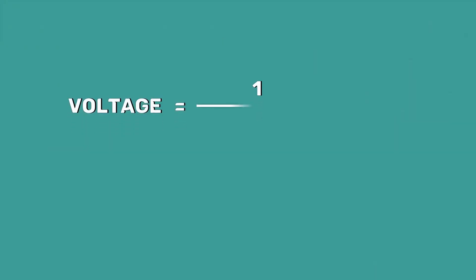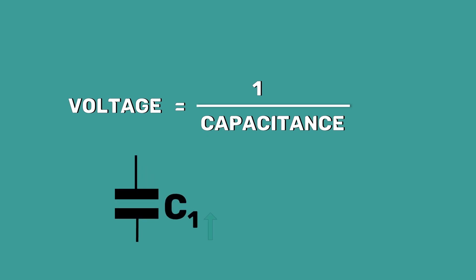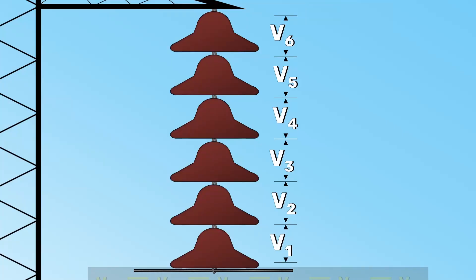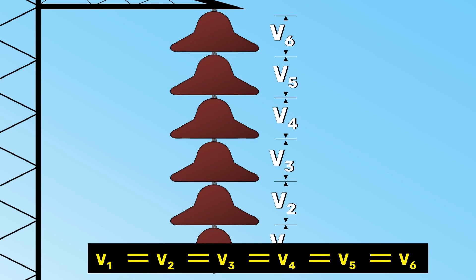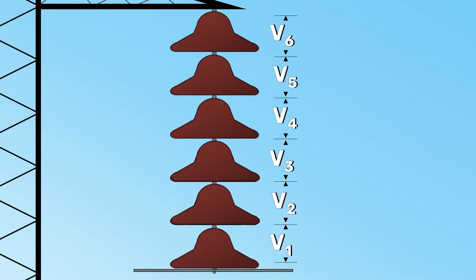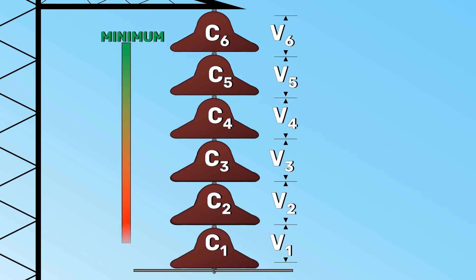How to reduce the voltage across the capacitor? We know that voltage is inversely proportional to the capacitance. This means if we increase the capacitance of the disc, the voltage across the disc will automatically decrease. In order to uniformly distribute the voltage, the insulator disc should be designed in such a way that the top unit has the minimum capacitance increasing progressively as the bottom unit is reached.